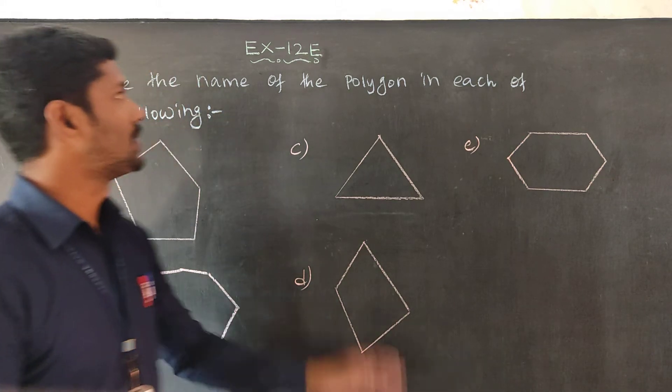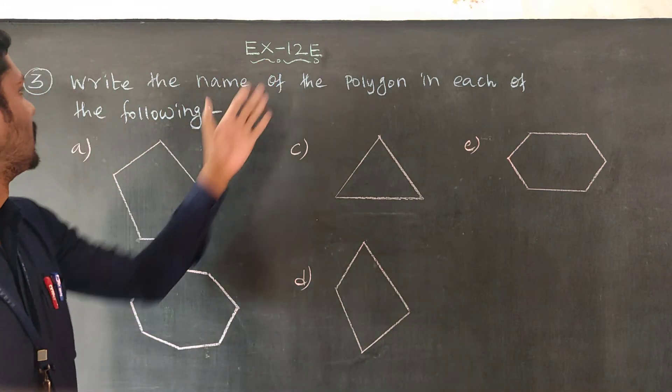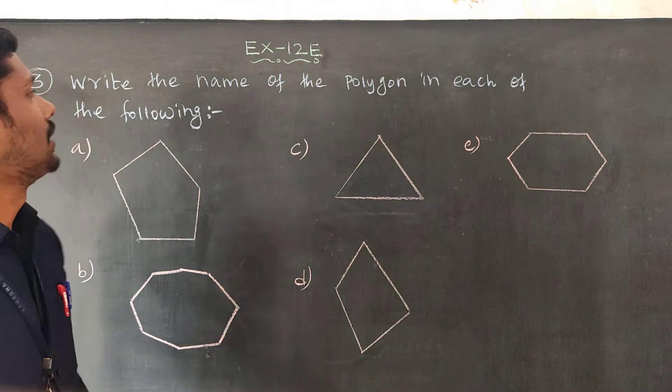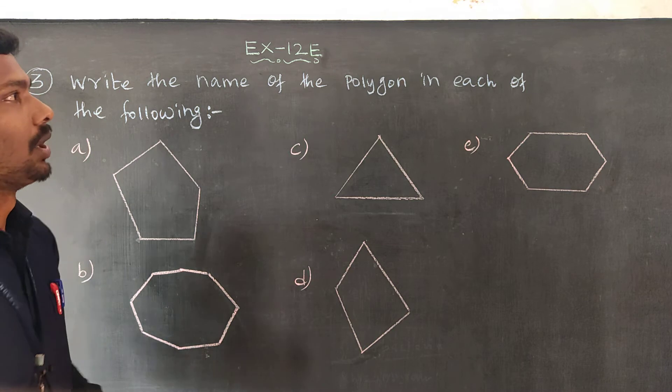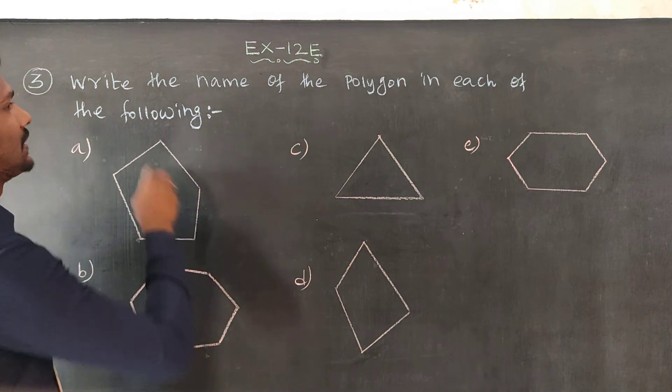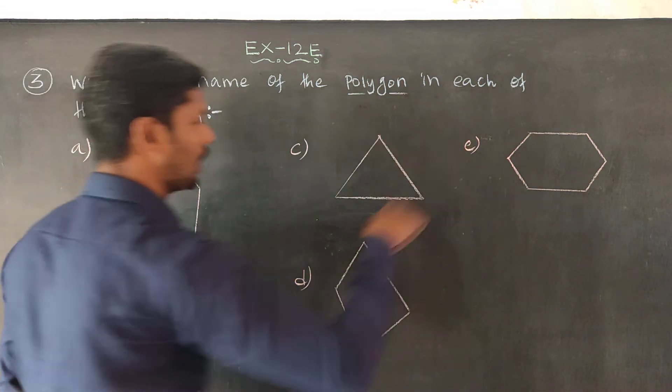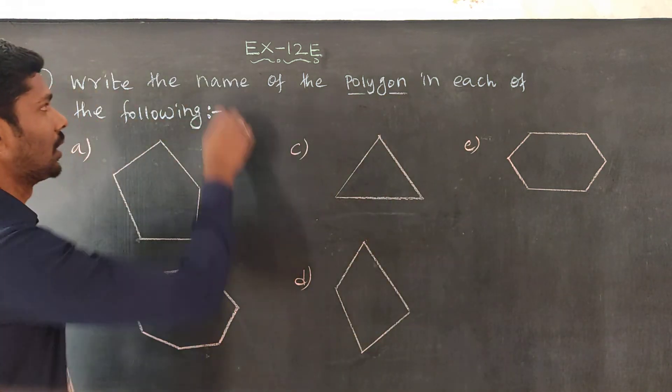Hey, Student. XA12, question number 3. Write the name of this polygon. You need to write the name of the polygon — that means you can write the name of the polygon.